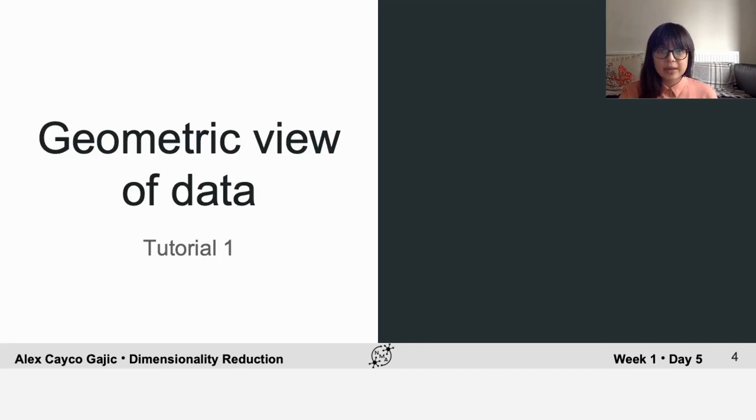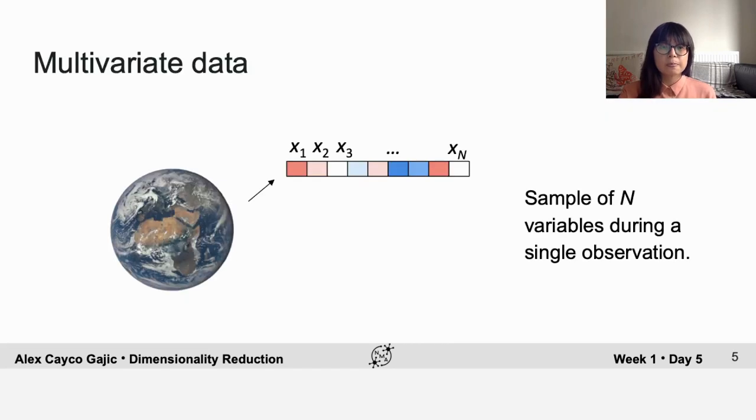But let's jump right into a geometric view of data. Multivariate means many variables, and as scientists, when we perform an experiment and make many observations, essentially what we're doing is collecting samples of many variables that we're observing through the experiment.